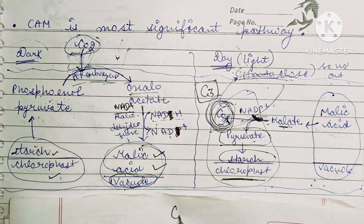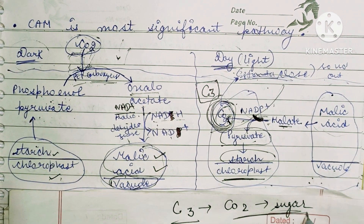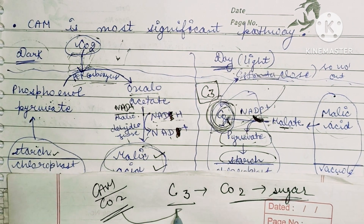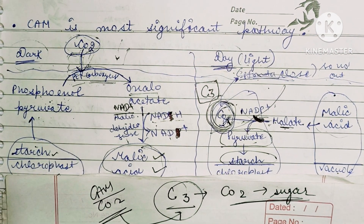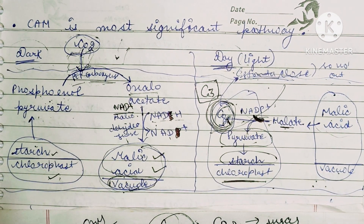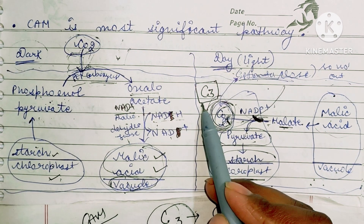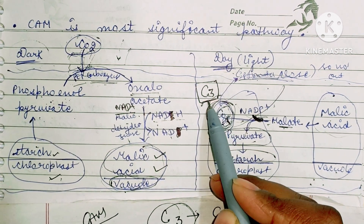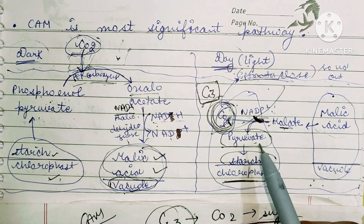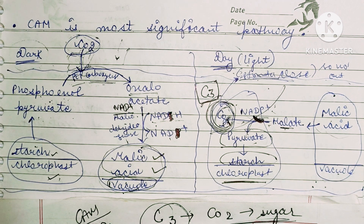In the C3 cycle, CO2 molecules are used to form sugar molecules. This CO2 goes through the C3 cycle as part of the CAM plant process. I hope you all understand — if you haven't seen the C3 cycle video, I'll put it in the description box. Watching the C3 cycle first will help you understand the CAM cycle more clearly. Thanks for watching, and don't forget to subscribe to the channel.